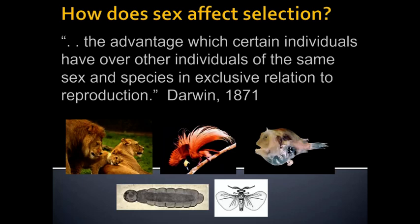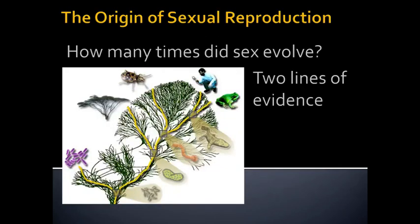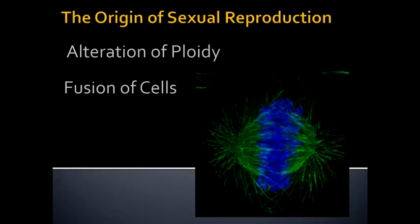Sexual reproduction evolved multiple times. We have two lines of evidence. The best is mapping sexual reproduction onto a phylogeny, where we notice it happened at least once in animals, at least once in plants — with some argument about whether it evolved more than once in those groups — and several other times in other groups. The second line of evidence is the mode of sexual reproduction: even though they're all meiotic, there are enough differences between sexually reproducing groups to suggest they evolved separately.